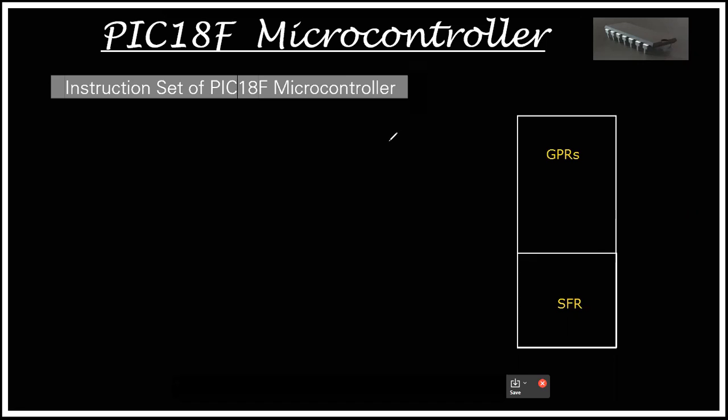So first of all, what is file register? File register is basically random access memory in microcontroller and we are moving value into file register. File register comprises of two parts: general purpose register and special function registers.